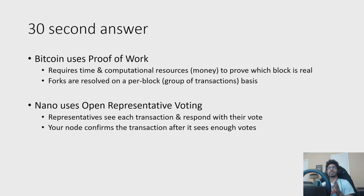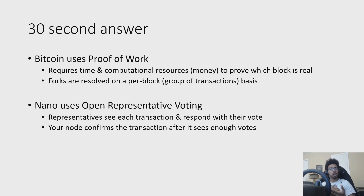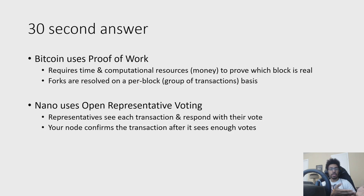So first of all, here's my attempt at a 30-second answer without too much depth, but it will leave a lot lacking, and I'll try to dive into the details in the rest of the slides. Bitcoin uses proof of work as its consensus mechanism — that's how it de-conflicts forks between blocks. It requires time and computational resources to prove which block is real. The longest and heaviest blockchain is the one that wins. Nano uses open representative voting, which operates on a per-transaction basis to maintain consensus. So when a transaction gets broadcast out, the representatives see that transaction and then respond with their vote weight, which is just the percentage of Nano delegated to them. Your own node sees all those votes coming in from all the different representatives, and once that transaction has enough votes, your node considers that transaction confirmed. At a very basic level, that's proof of work versus open representative voting.